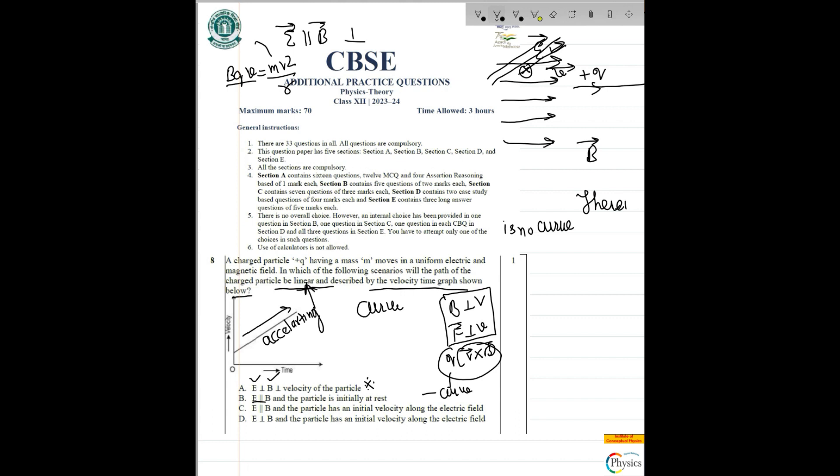Let's say E is parallel to B and particle is initially at rest. If the particle is at rest, the formula of BQV fails. You have no velocity. If you don't have a velocity, you can't have a circular motion.